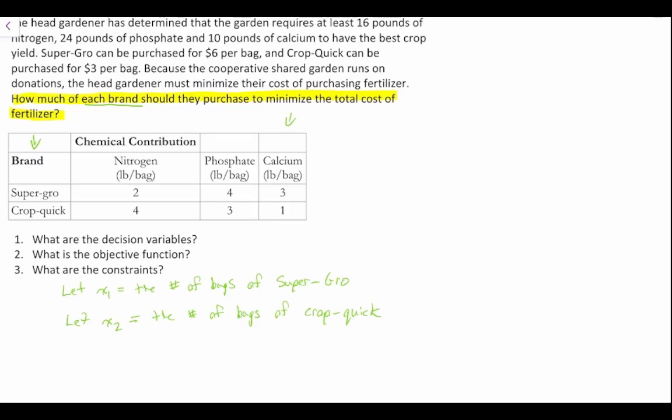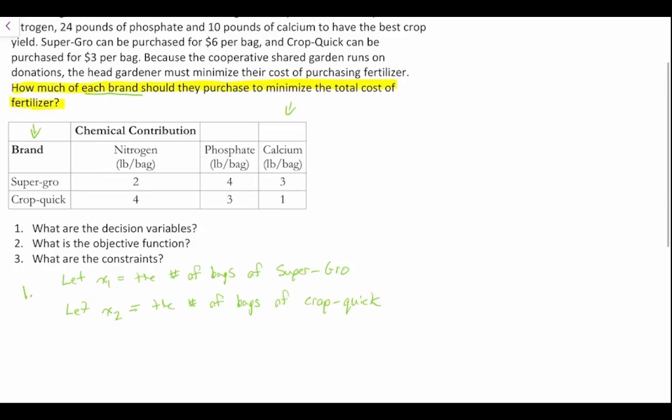It's important that we put our units in here — the number of bags. We're putting that very explicitly in our statement about what we're defining for the decision variables. This is especially important for more complex problems where we want to remind ourselves what each decision variable equals. That is our answer for question one: X1 equals the number of bags of Super Grow and X2 equals the number of bags of Crop Quick.